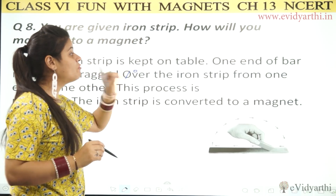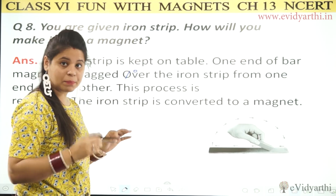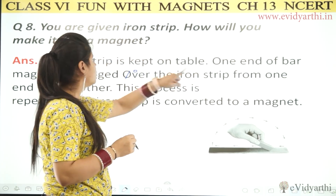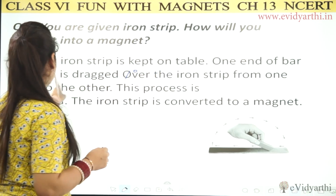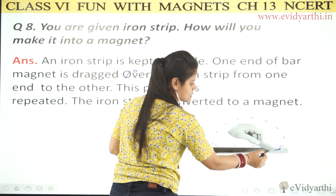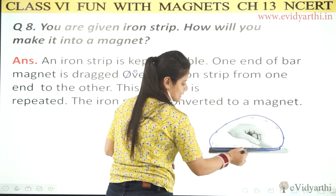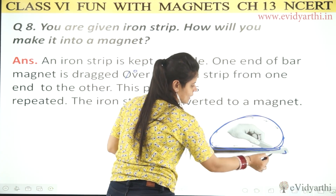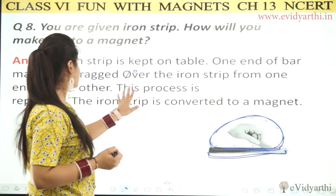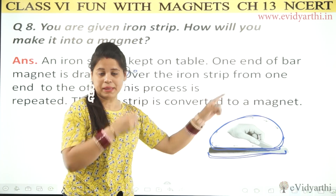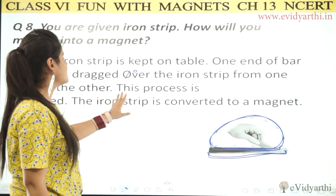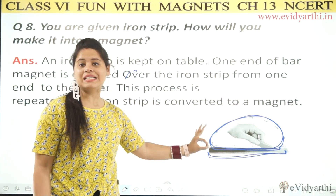So this is what you do with one end of the bar magnet — you drag it from one end of the iron strip to the other. This process is repeated several times. Finally, the iron strip is converted into a magnet. So this was question number 8.